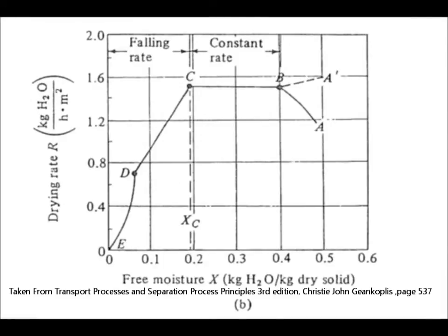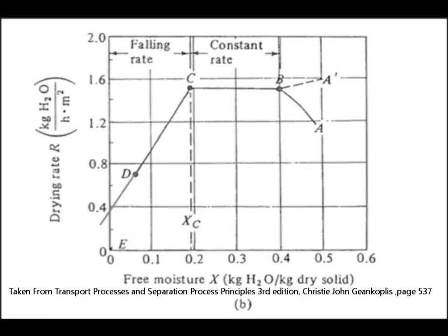There are two types of falling rate drying curve. The falling rate shown here passes through the origin, while this graph shows that the falling rate passes through the y-axis.